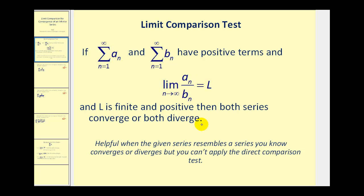The idea behind this test is: if we let a_n be the given series and it resembles b_n, and we know b_n either converges or diverges, then if the limit of the quotient equals L, which is finite and positive, we can use that to determine whether a_n also converges or diverges. The limit comparison test can be helpful when maybe we can't apply the direct comparison test. Let's take a look at some examples.